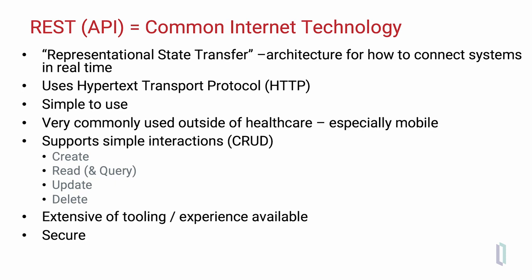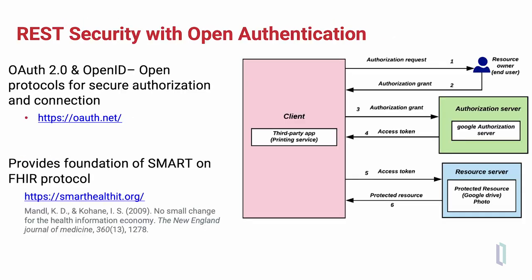There is also security commonly employed in other internet applications. That security is most commonly enabled by open authentication. The OAuth 2 and OpenID open source standards provide protocols that allow secure access to FHIR resources on different servers and enable the widely used SMART on FHIR protocol, which is part of U.S. regulations to enable applications to access FHIR data in EHRs or as stand-alone applications.